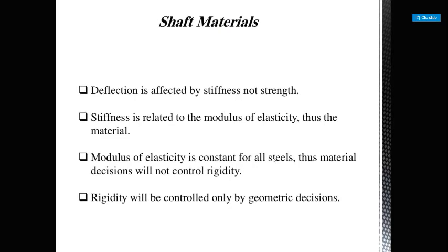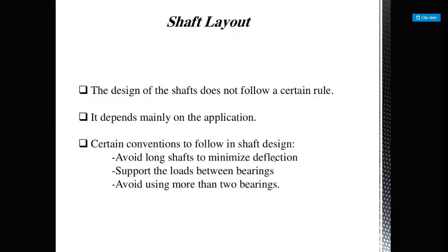Regarding shaft materials, deflection is affected by stiffness, not strength. We have to be careful when choosing soft materials because stiffness is related to the modulus of elasticity. The modulus of elasticity is constant for all steels, so material decisions will not control rigidity — rigidity is controlled only by geometric decisions.